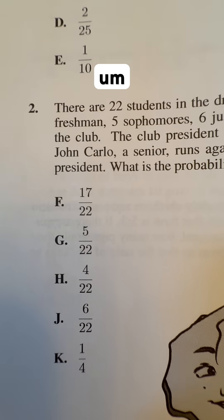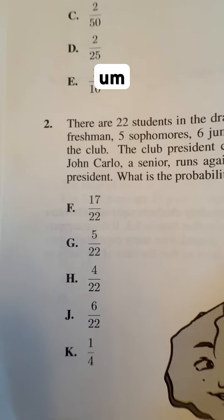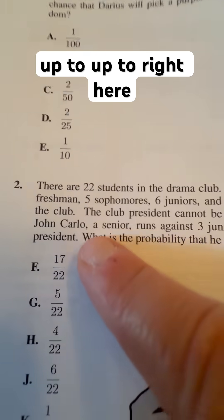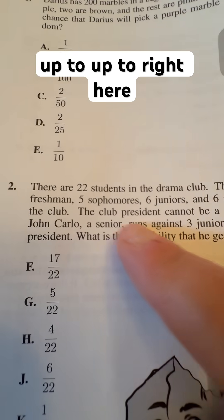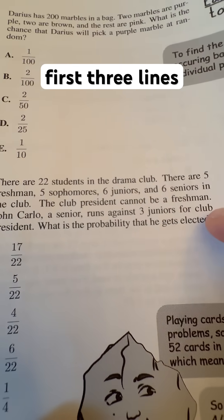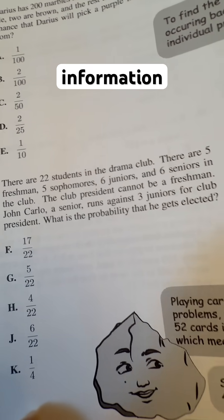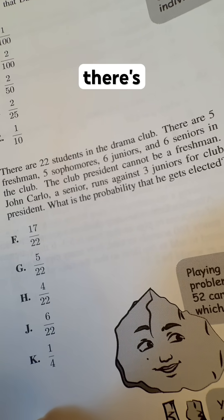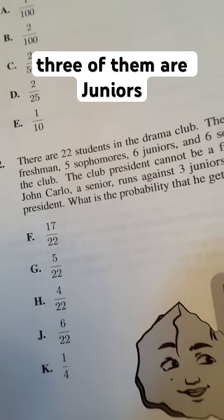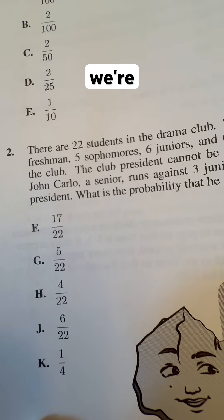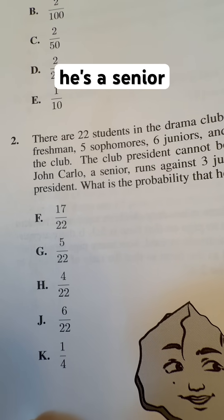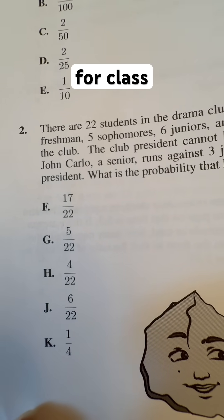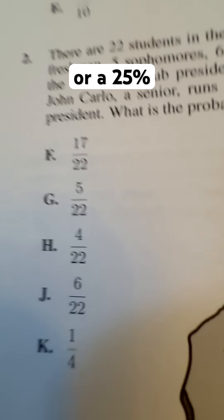Here's your choices. So misleading, because quite honestly, up to right here, these first three lines are useless information for us for this problem. We really just need to know there's four people running for president. Three of them are juniors. We're looking for Giancarlo — he's a senior. It's one out of four students running for class president, or a 25% chance.